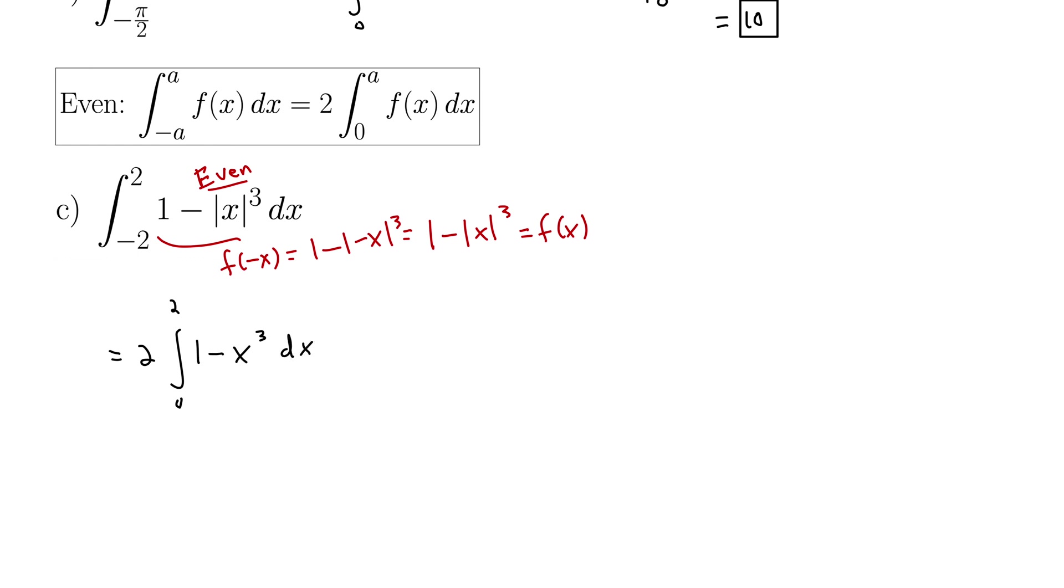This integral is actually two times the integral from zero to two of one minus x cubed dx. What happened to the absolute value? Now since we're going from zero to two, we're only in the positive region. So we can actually drop that absolute value. It's no longer necessary. So a lot of good things happen when you can use this property of even functions.